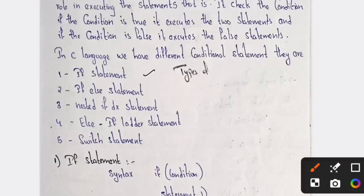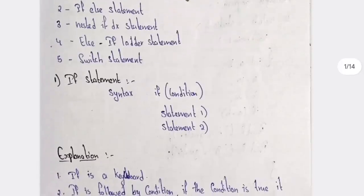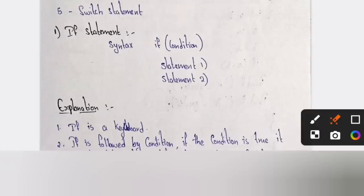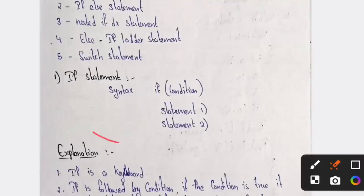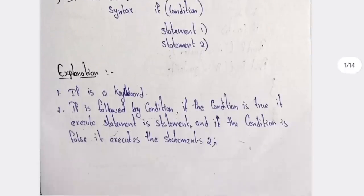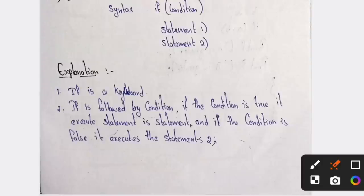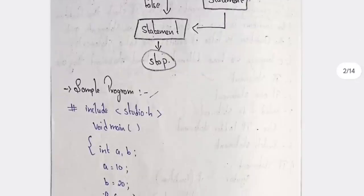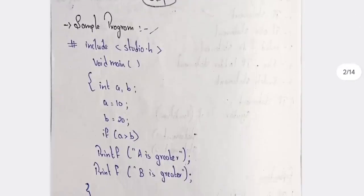Remember only if statement, if-else, and nested if — these three are important and three is enough. After writing that, half the page will be over. For the if statement, the syntax is: if condition, statement one, statement two. This is the syntax. The explanation part is not that important, just write the syntax — that will be enough. The flowchart is also not important.